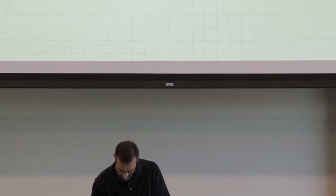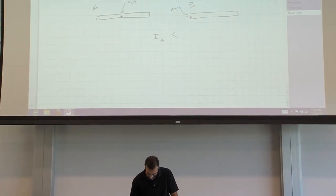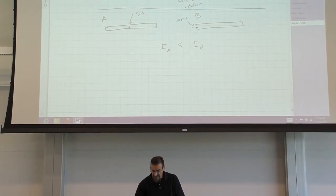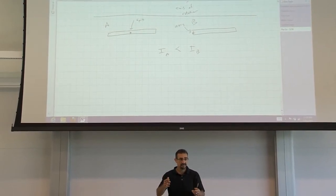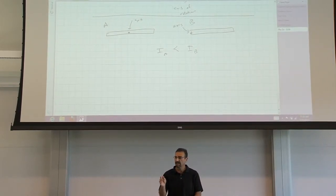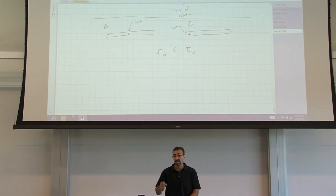So the rotational inertia in this case, we'll call this A and this B, the rotational inertia for A is going to be less than the rotational inertia for B, even though it's the exact same rod, same length, same mass. You pick a different axis of rotation, it has a different rotational inertia.